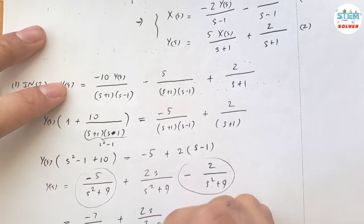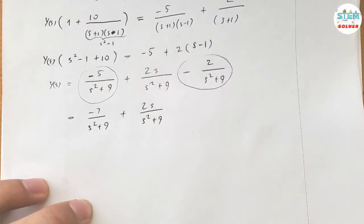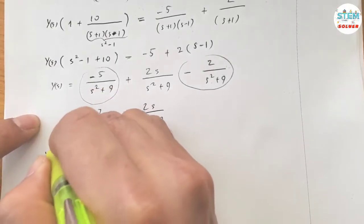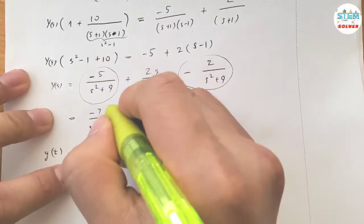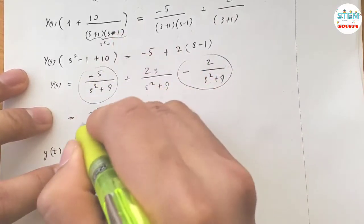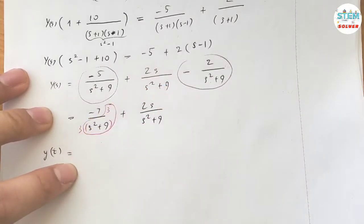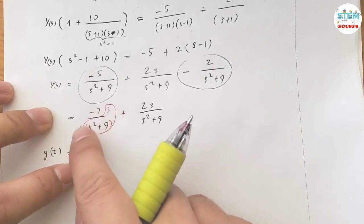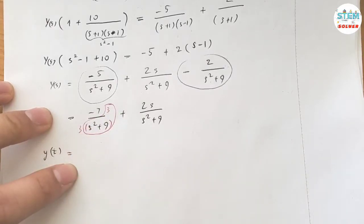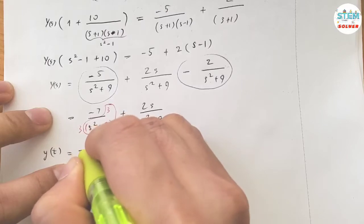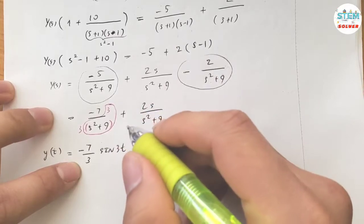Combine the constant terms: negative 5 and negative 2 give negative 7 over (s squared plus 9). So Y(s) equals negative 7 over (s squared plus 9) plus 2s over (s squared plus 9). Now take the inverse Laplace on both sides. For the first term, I need a 3 in the numerator — multiplying top and bottom by 3 gives negative 7 over 3, times 3 over (s squared plus 9).